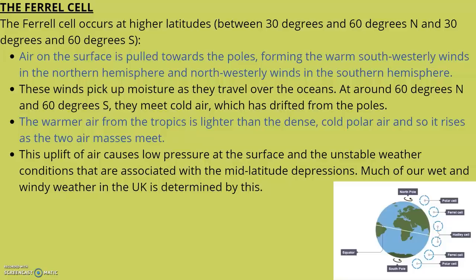At around 60 degrees north and south, they meet cold air which has drifted from the poles. The warmer air from the tropics is lighter than the dense cold polar air, and so it rises as the two air masses meet. This uplift of air causes low pressure at the surface and the unstable weather conditions associated with mid-latitude depressions.